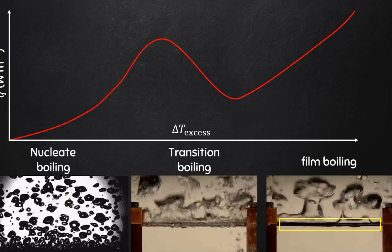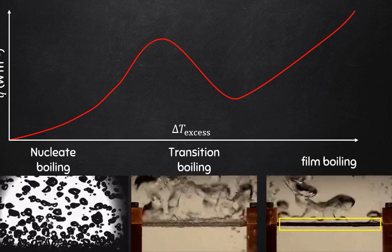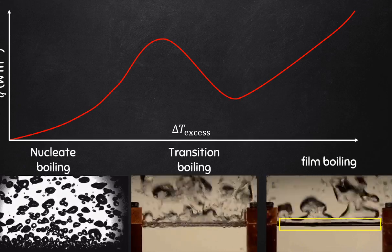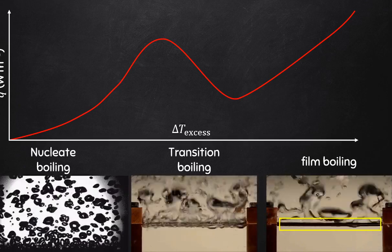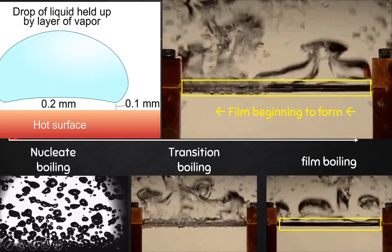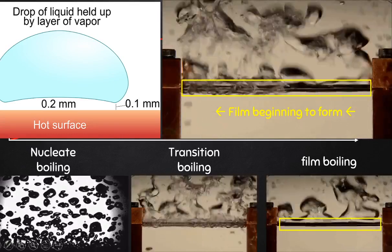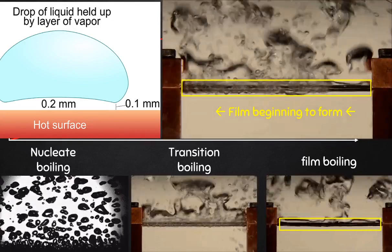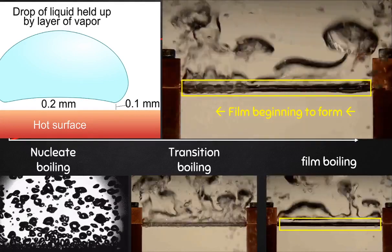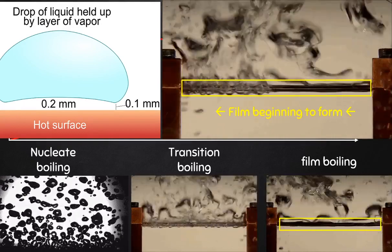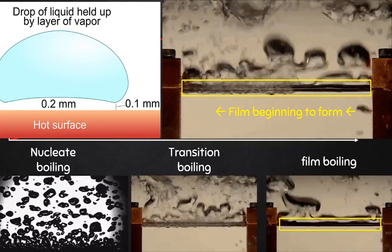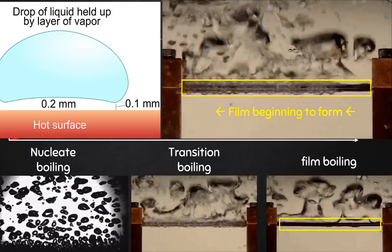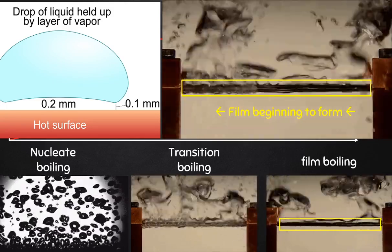To answer these questions it is helpful to consider the boiling curve, with heat flux plotted on the y-axis and excess temperature delta T-excess on the x-axis. During film boiling, the liquid is elevated upwards by a continuous vapor pocket that cushions it from the solid interface. Consider the differences in thermal conductivities between liquid and gas, and how heat transfer is affected by this phenomenon.